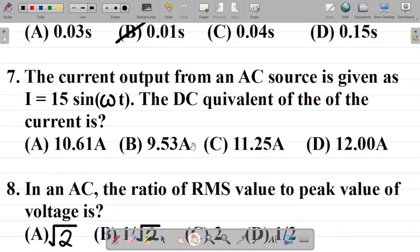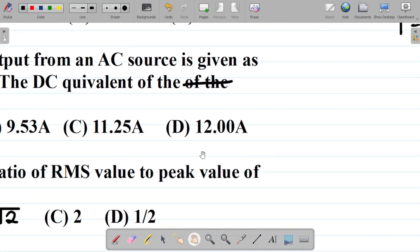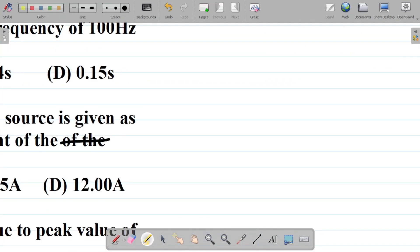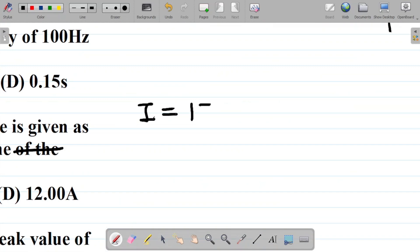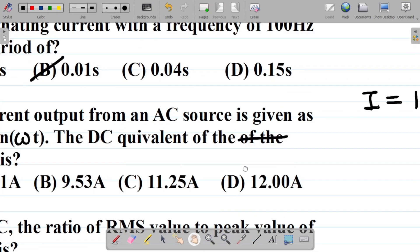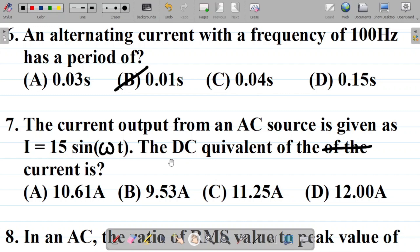Let's look at number 7. It says the current output from an AC source is given as I being equal to 15 sine omega t. The DC equivalent of the current is... First things first, let's list out the parameters given. You're given the current I as equal to 15 sine of omega t. We should find the DC equivalent of the current. How do you find DC equivalent of the current?